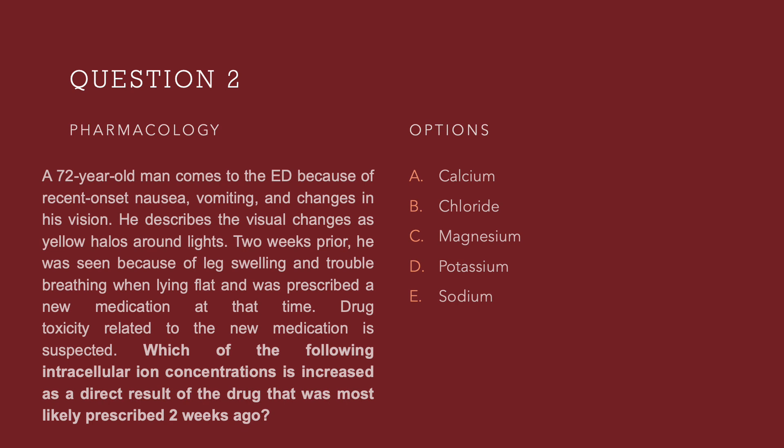From the scenario, we all know that this patient has come with GI symptoms plus vision changes described as yellow halos around light. He was admitted likely for congestive heart failure and was likely given digoxin. Digoxin can lead to toxicity if there is hypokalemia — that means low potassium levels in the blood can give rise to digoxin toxicity, and the low potassium could be because of furosemide given at that time. Digoxin toxicity leads to hyperkalemia.